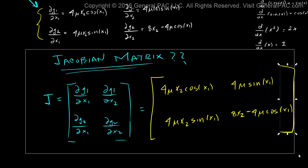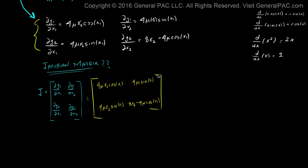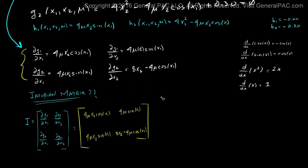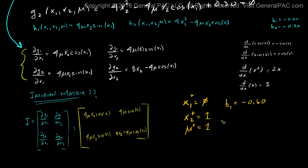Now let's recap and introduce our initial variables. x1 is equal to 0, and x2 is equal to 1. The other initial variable, u, is also equal to 1. We've already figured out that b1 is equal to negative 0.60 and b2 is equal to negative 0.30. These are our initial values.